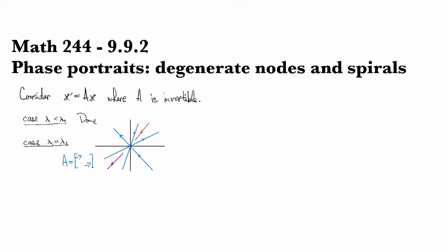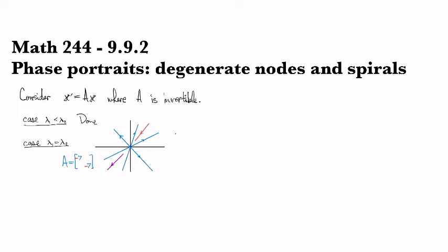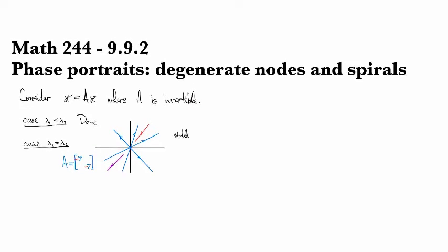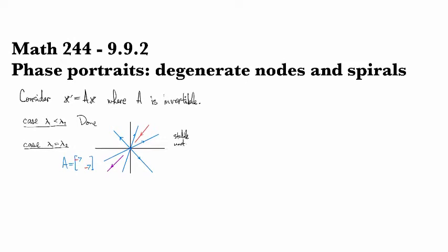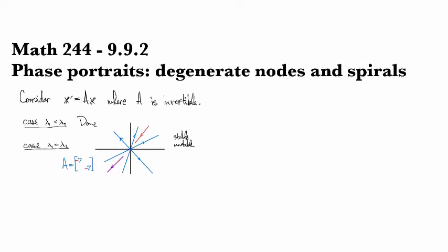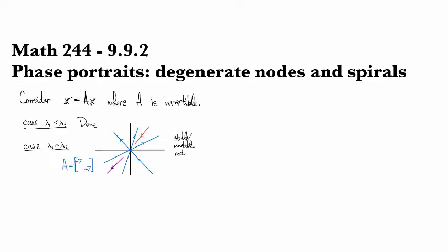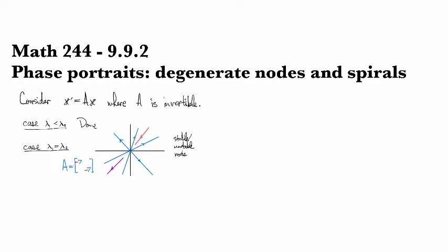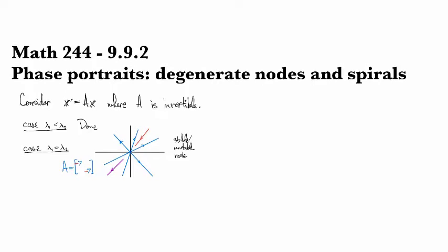So that's one thing that can happen. That would be a stable or unstable node, proper node, depending on which case you're in, positive or negative.